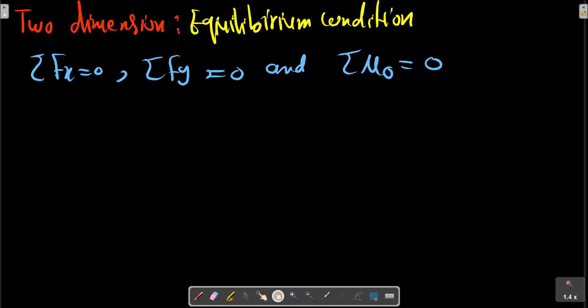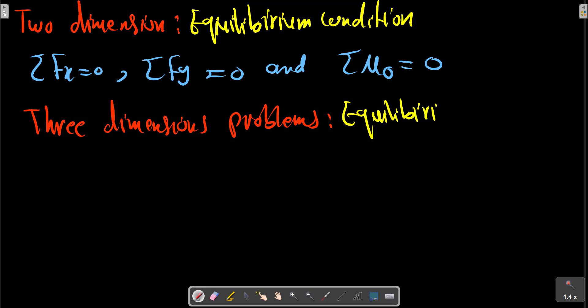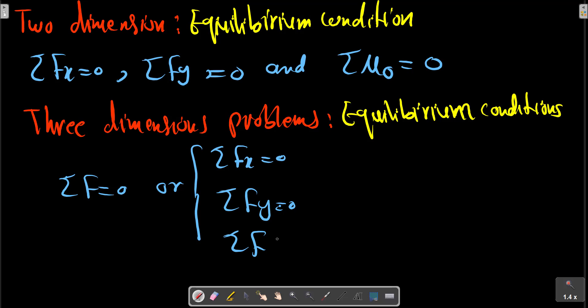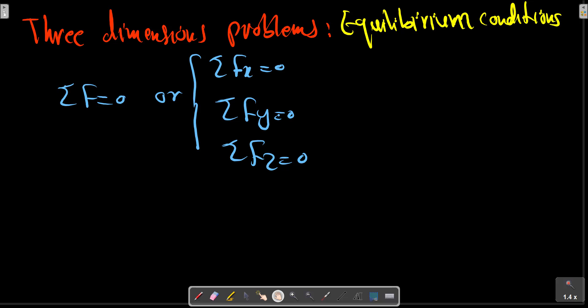In three dimensions, the equilibrium condition is: We have sigma F equals zero, or Fx equals zero, Fy equals zero, and sigma Fz equals zero. And for the moment, sigma M equals zero.